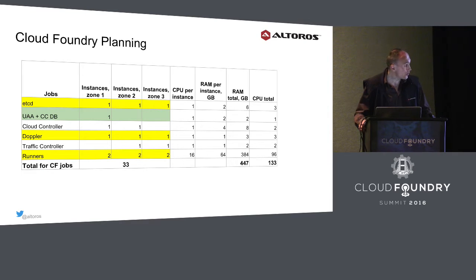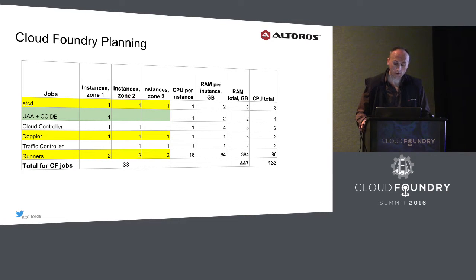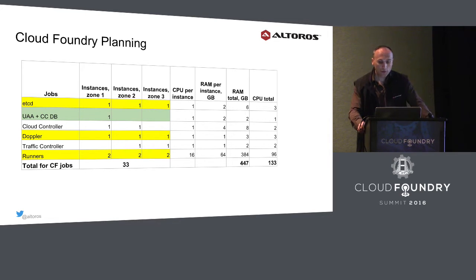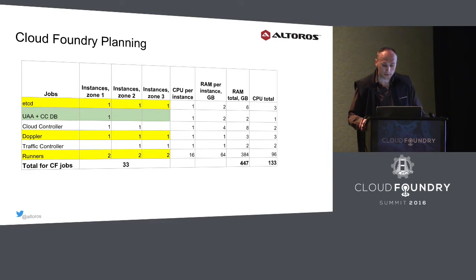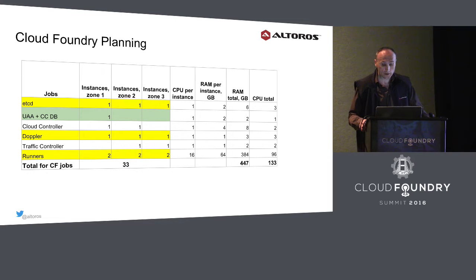There is a service registry called ETCD which should have three instances to meet HA requirements. LogGregator Traffic Controller should have at least one instance in every zone. And as mentioned, application runners — which may be DEA or Diego cells — are the major resource consumers in a Cloud Foundry deployment.